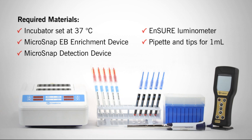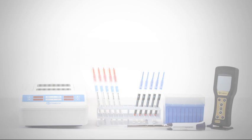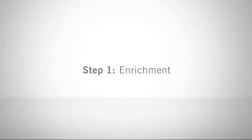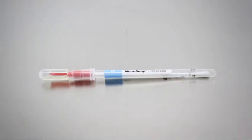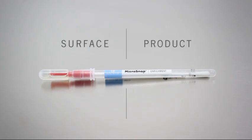Let's get started. Microsnap is a two-step test. The first step is the enrichment step. Microsnap EB can be used to test environmental surfaces, product samples, water, and other filterable liquids.